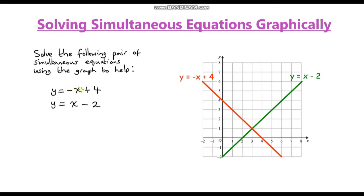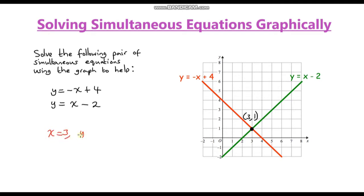So here we've been given two equations and I've plotted those two equations on a graph. We can actually use this graph to solve this pair of simultaneous equations, and the solution is where the two lines intersect. We can see that they intersect at this point, where we go along three and up one. So our coordinates are (3, 1), meaning x equals three and y equals one.